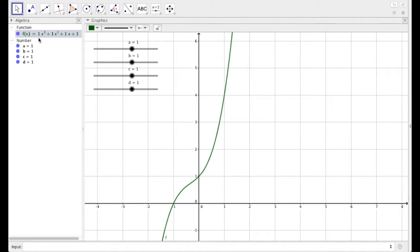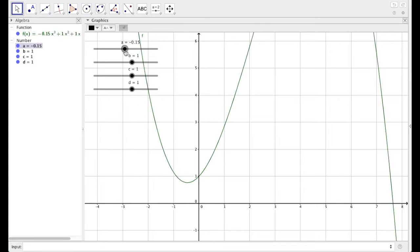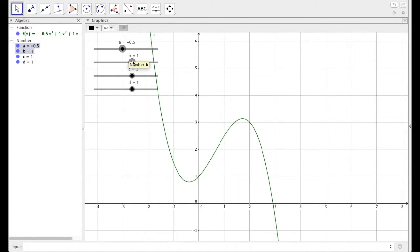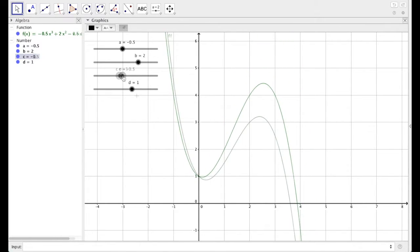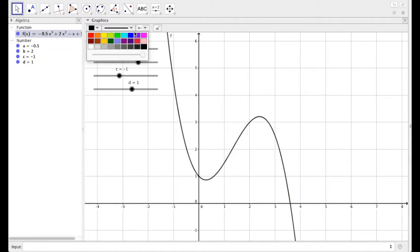So here's our cubic if our function was x cubed plus x squared plus x plus 1. Now I actually want a to be negative 0.5, b to be 2, c to be negative 1, and d can remain at 1. And I'm going to color this function black and make it a little bit thicker. So there we have it. So there's our function. If you want to change this to be any other cubic polynomial, you can do so by just adjusting those sliders.